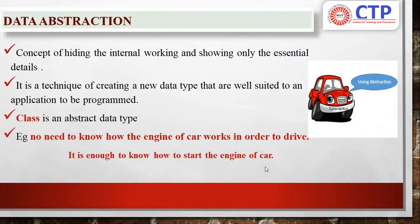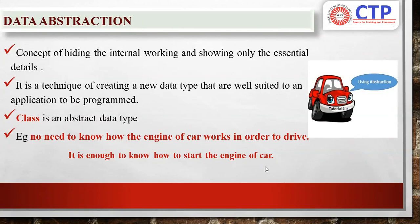Data abstraction is the concept of hiding the internal working and showing only the essential details. For example, if you want to drive a car, it is enough to know what the accelerator is, what the brake is, how to apply the brake, how to apply the clutch, how to apply the gear, and how to steer. We don't want to know the internal functionalities of a car — like how the engine works, how the accelerator works, how petrol is converted into combustion, and how the combustion makes the engine run. These are called internal details. Data abstraction is the concept of showing only the essential detail and hiding the internal details, and you can achieve it with the help of a class.